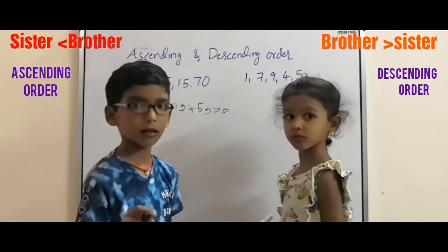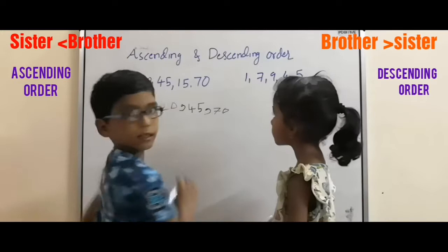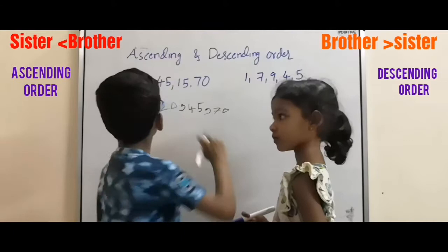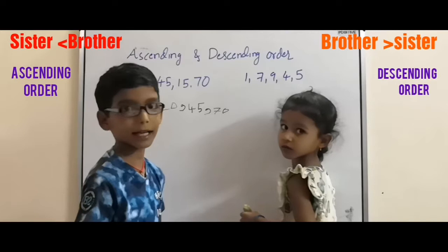Descending order means big to small, you know. Then do the reverse. The big number is 70. Next smaller number is 45. Next smaller number is 20. Next smaller number is 15. Like this.